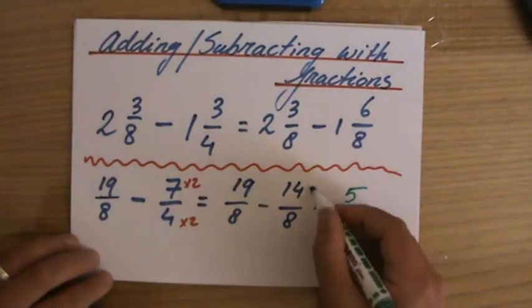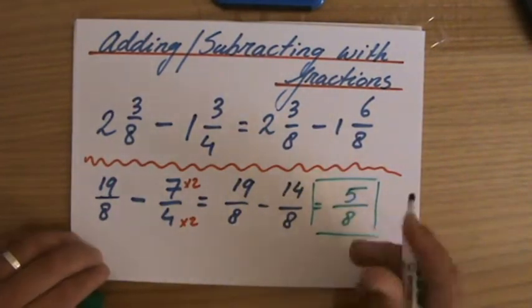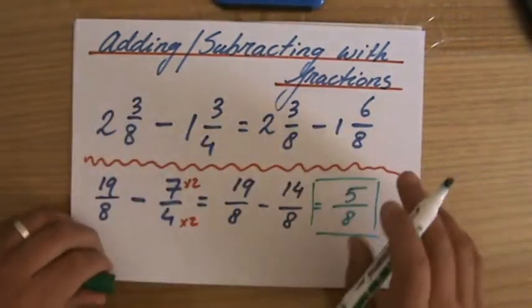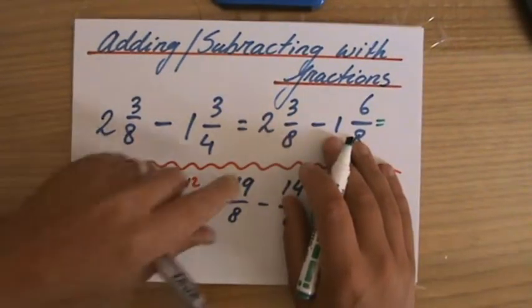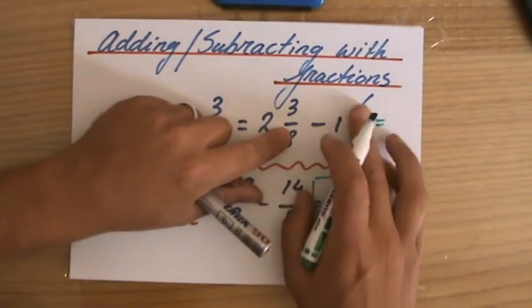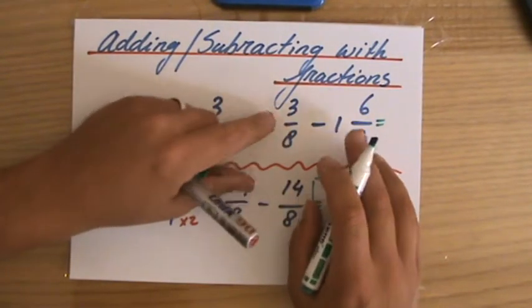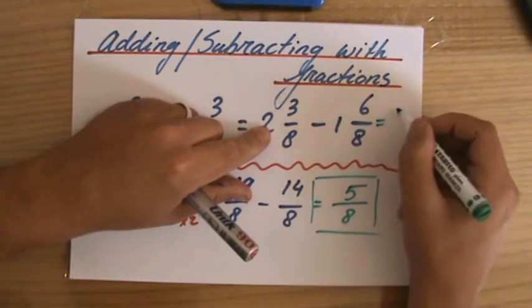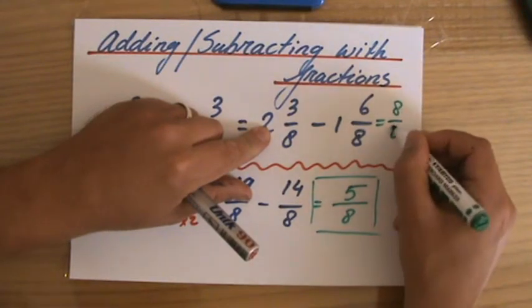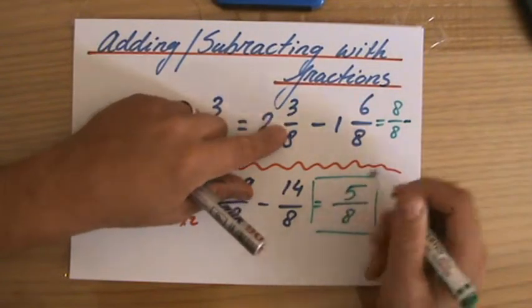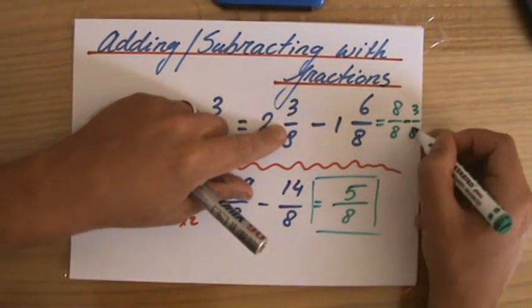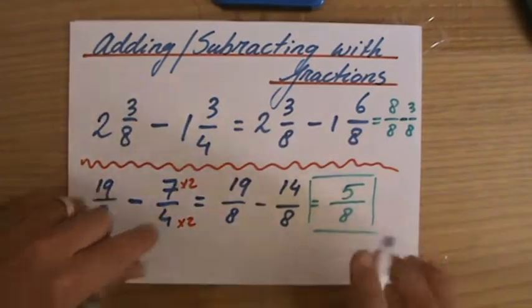Now that is my final answer. Now if you would have used this method, then you should have done the following: 2 minus 1, that is 1, but then I still have 3/8 minus 6/8. So the 1, if you like, is 8/8, and I still got to take away 3, minus 3/8.